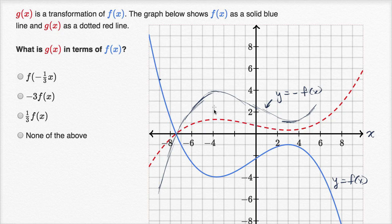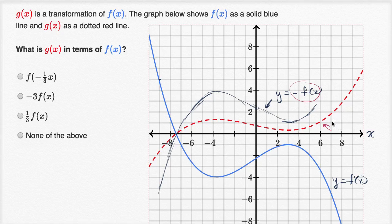Now g of x looks like a diminished version of that. If I were to just eyeball it, it looks like it's roughly one-third of this. So my initial guess is that this right over here is one-third the value of this. So I would say g of x is equal to one-third of negative f of x, or negative one-third of f of x.